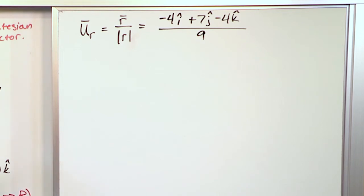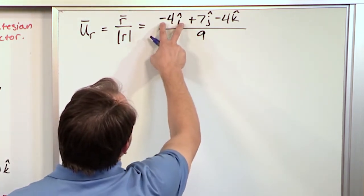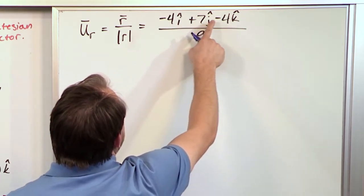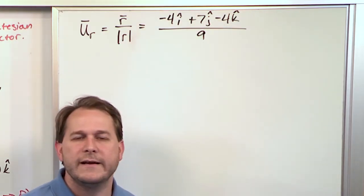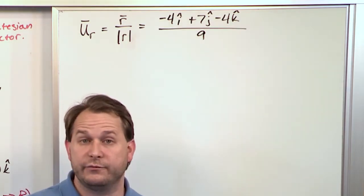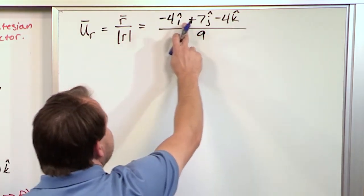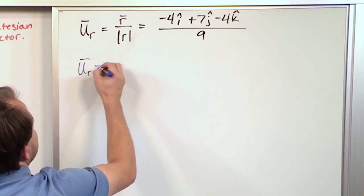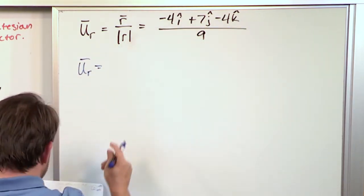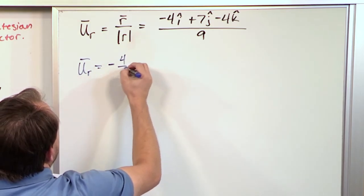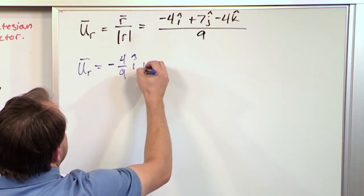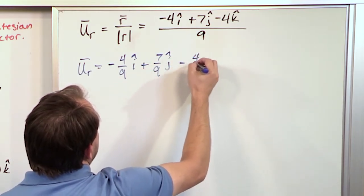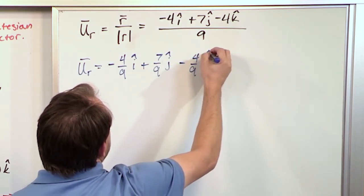And this, vectors follow the rules of algebra more or less. You have a term here added to a term here added to a term here. The i and the j and the k, they're just markers that signify what direction we're talking about. So, when you see a giant vector like this divided by a number, all you have to do is divide each little term just like you would typically do. So, what you have is negative 4 ninths in the i direction plus 7 ninths in the j direction minus 4 ninths in the k direction.